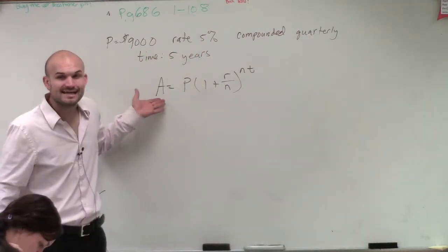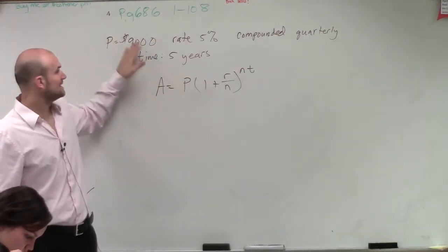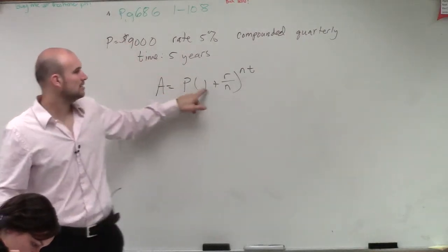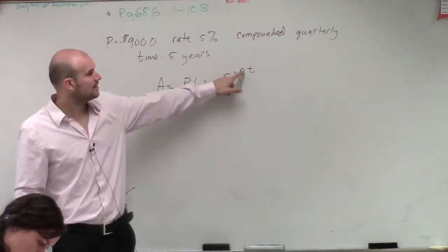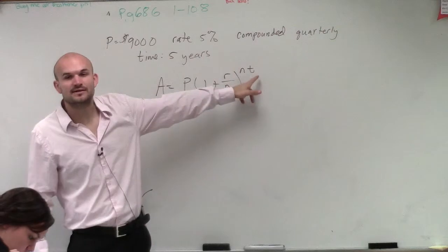Remember, A is our final value. P is our initial amount, or principal. R is our interest rate. N is how many times we compound it in a year. And T is the number of years.